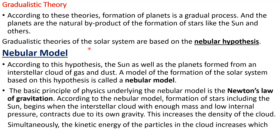Gradualistic theories of the solar system are based on the nebular hypothesis. According to this hypothesis, the sun as well as the planets formed from an interstellar cloud of dust and gas which are just roaming in the universe. A model of the formation of the solar system based on this hypothesis is called a nebular model — that is, the interstellar cloud of gas and dust.